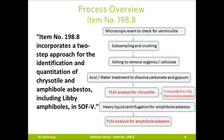Item number 198.8 incorporates a two-step approach for the identification and quantification of chrysotile and amphibole asbestos, including Libby amphiboles, in spray-on fireproofing with vermiculite. The process begins with a binocular microscope examination to check for the presence of vermiculite. Following this step, there is subsampling and crushing of the sample, ashing to remove organics such as cellulose, acid and water treatment to dissolve carbonate and gypsum, and PLM analysis on the zinc fraction. If chrysotile is present at greater than 1% as determined by PLM, the process is complete. If not, heavy liquid centrifugation for amphibole asbestos is conducted, and PLM analysis of the resulting zinc fraction is done.